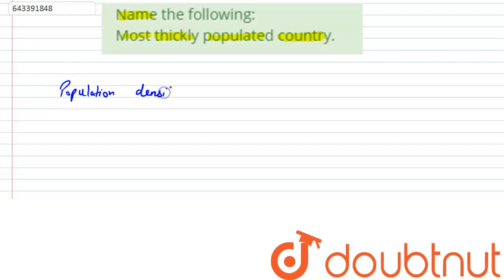Population density, that is the number of persons or people per square kilometer of land area, per square kilometer of land area. So according to the population density, the most